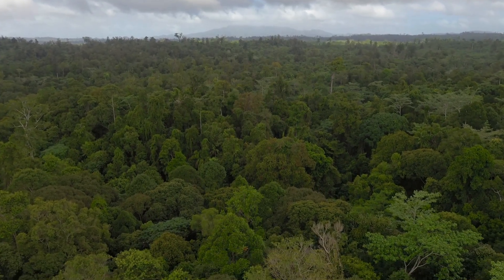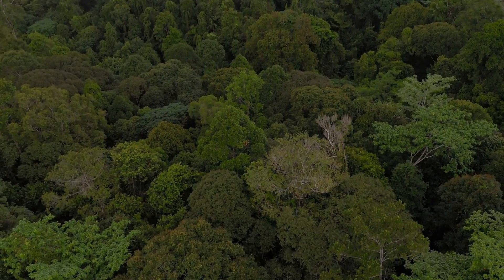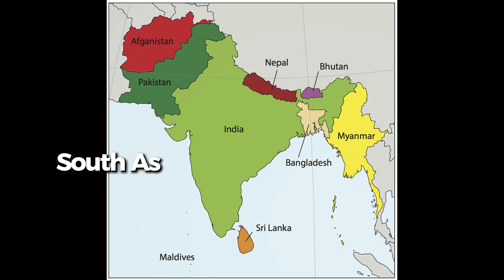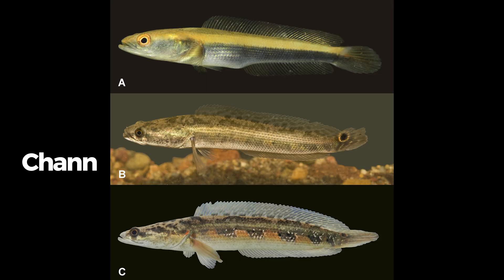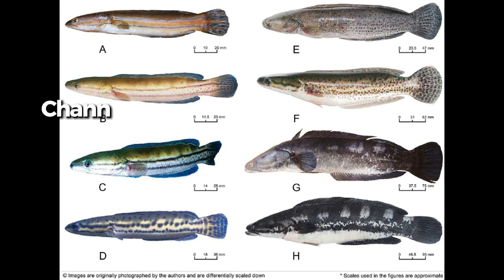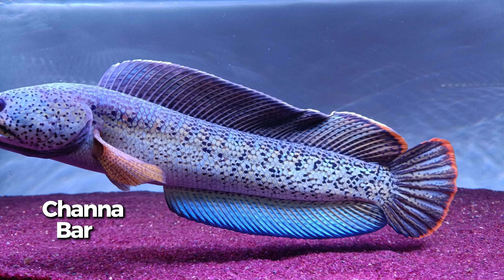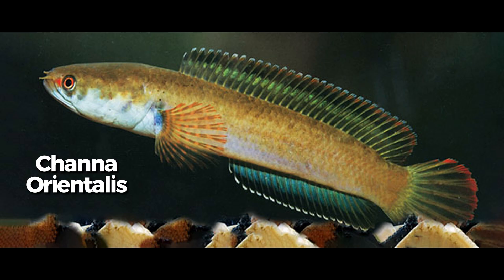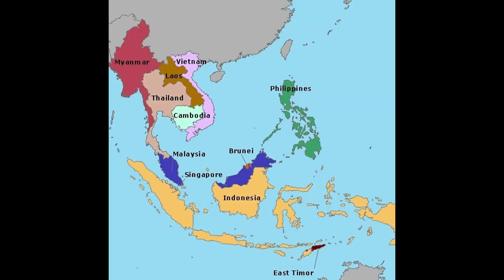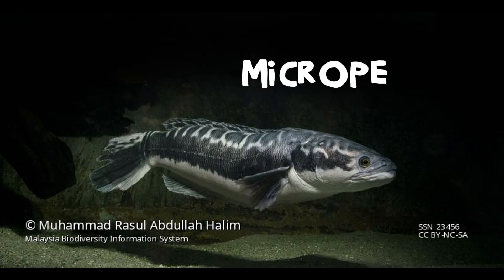In terms of geographical origins, you can find them mostly in Asia. In South Asian countries such as India, Sri Lanka, Bangladesh, and Nepal, some notable species you may find are chana marulius, chana diplogramma, chana gachua, chana barka, and chana orientalis.